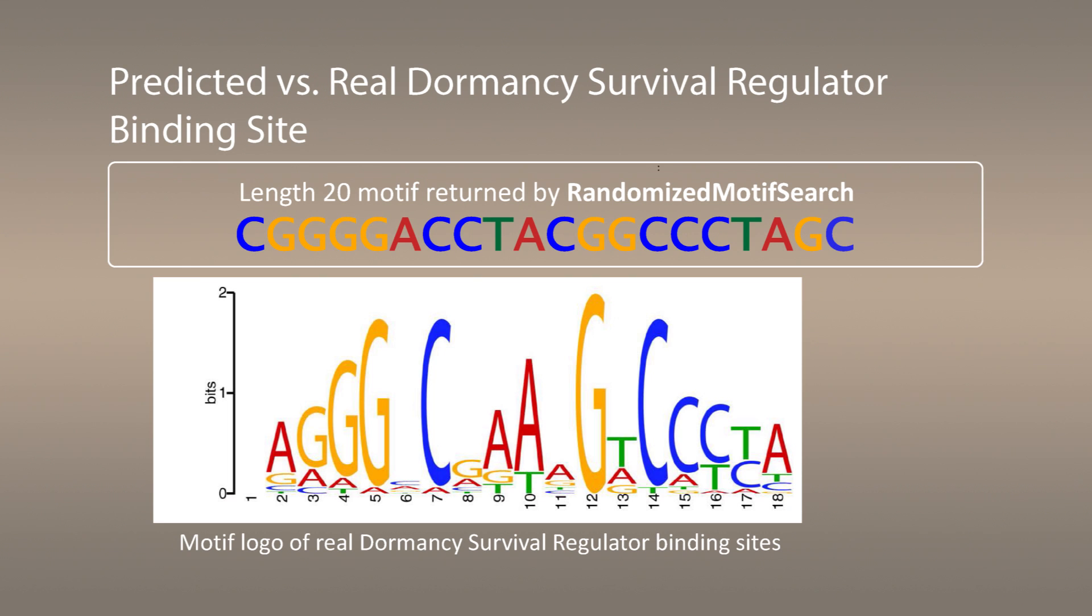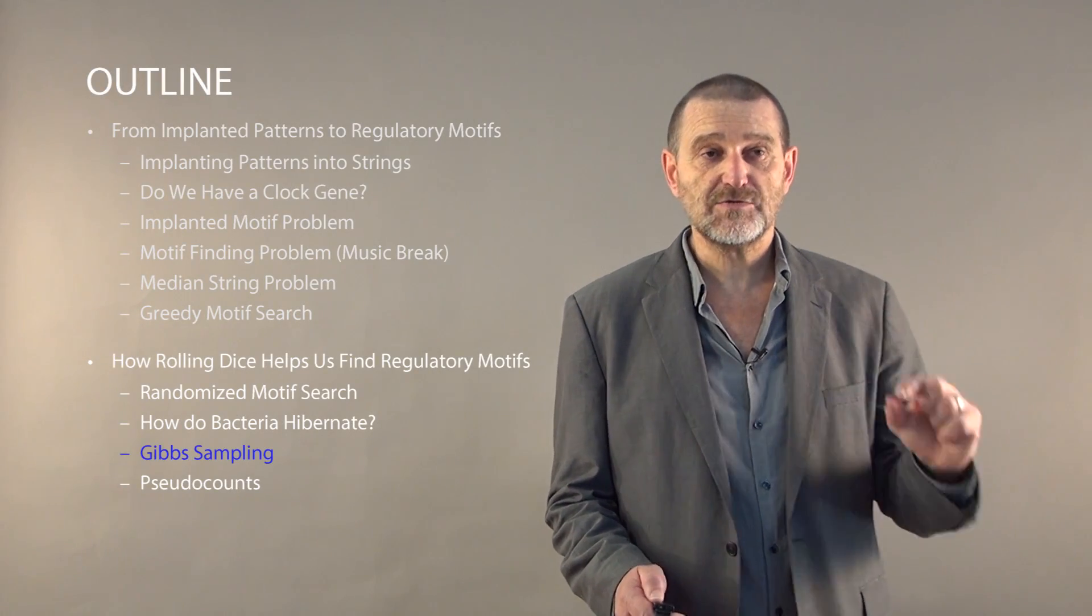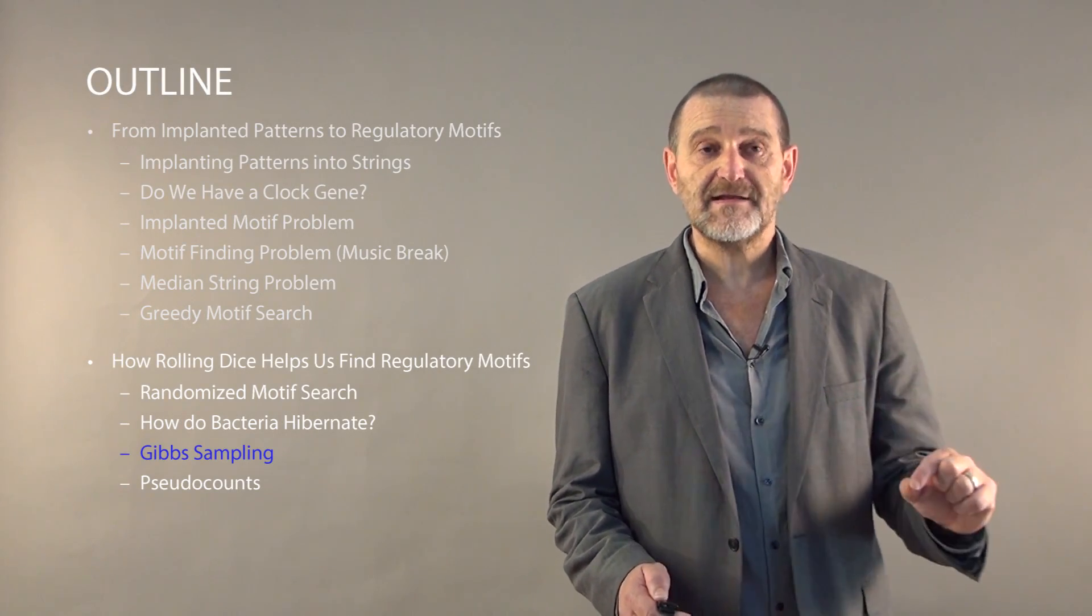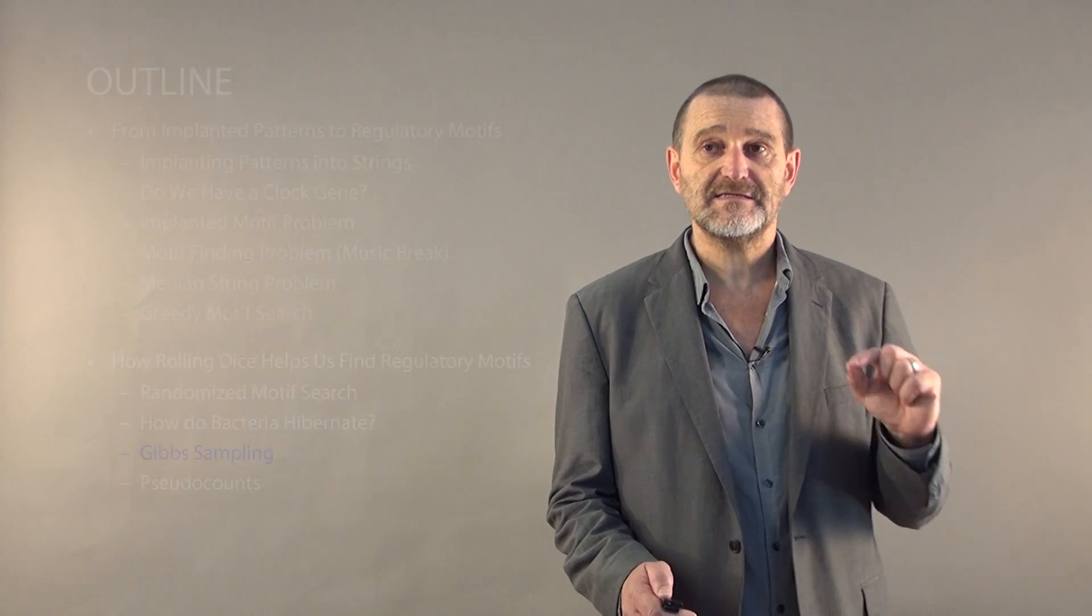You can see that our randomized motif search actually captured a good portion of the motif. But you can also see that we missed in some places. We need to work harder and figure out what to do to develop better regulatory motif finding algorithms. We move next to another randomized algorithm called Gibbs sampling.